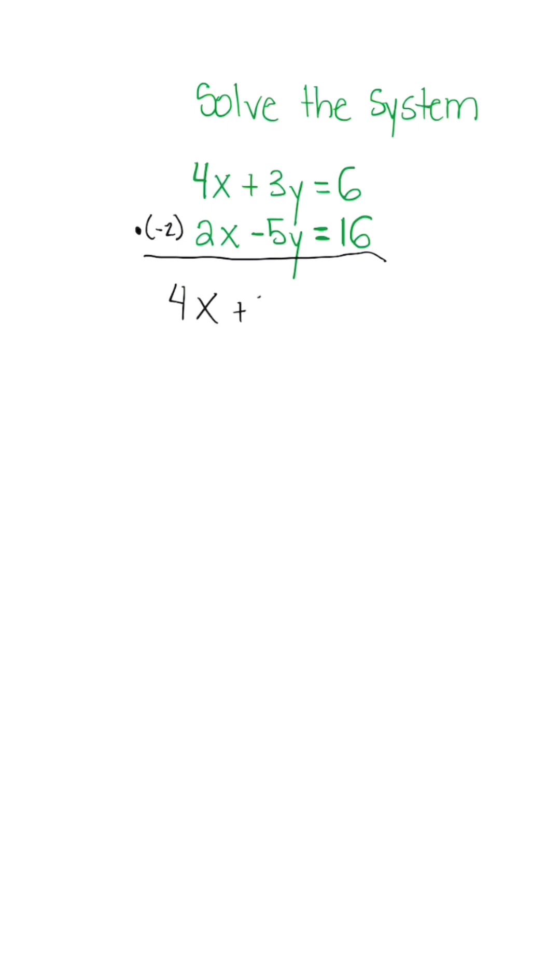So first equation stays the same. Second equation is going to be negative 4x plus 10y is equal to negative 32. Please make sure you multiply the entire equation, not just a variable you're trying to get rid of. Common mistake that I do see.